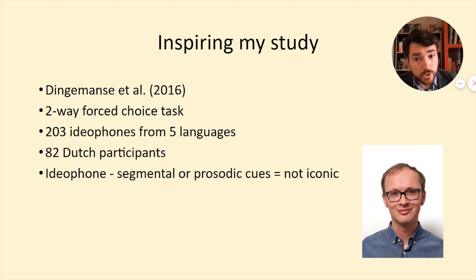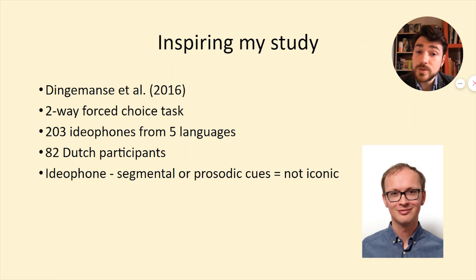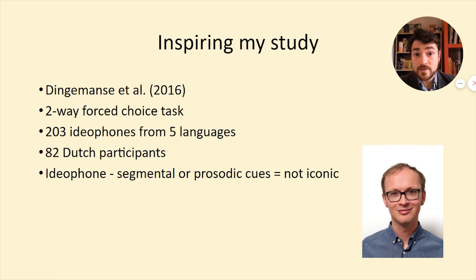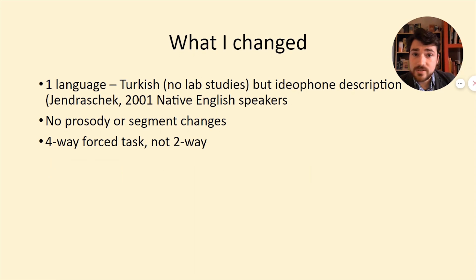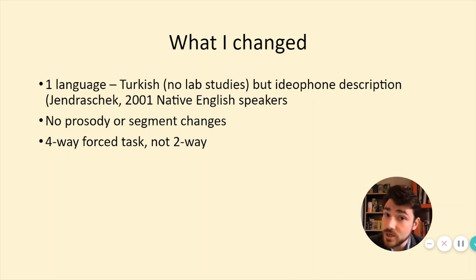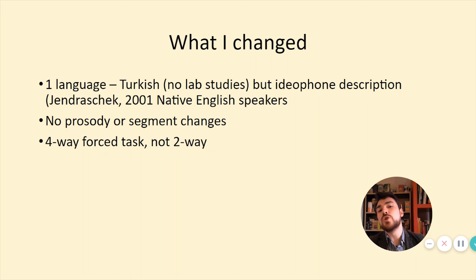My supervisor Martin Monser and his colleagues in 2016 conducted an experiment whereby they took 203 idiophones from five real-world languages from across the world and gave them to Dutch participants, who were asked to indicate the correct meaning in a two-way forced choice task. The researchers also manipulated the prosody and segmental cues of the idiophones to try to break iconicity. I set out not to break iconicity but to test it. Instead of five languages, I used one — Turkish — a language which, to my knowledge, had not been tested before in this way.